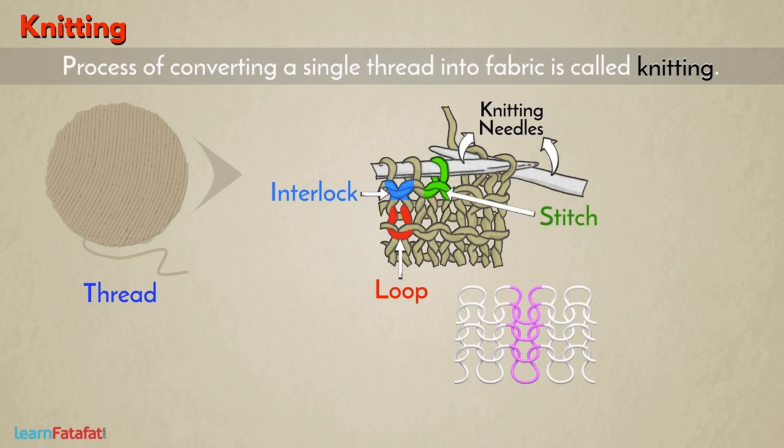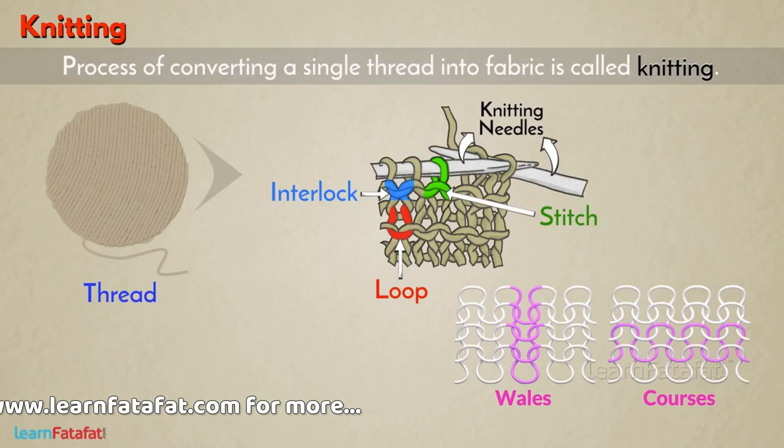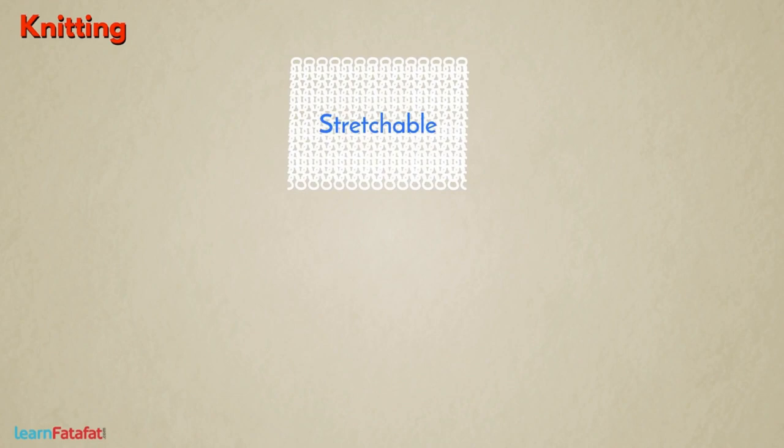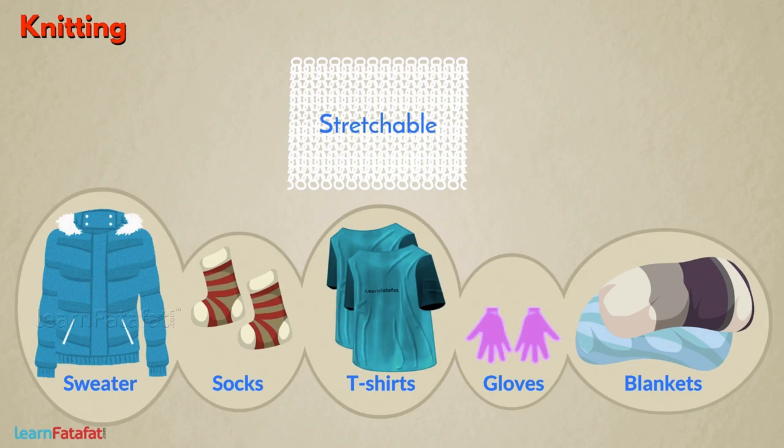The vertical columns of interconnected loops are called wales and horizontal rows of interconnected loops are called courses. In wales or courses, the yarn follows a circuitous meandering path. A very important property of knitted fabric is that it is stretchable. With this property, we are able to produce things such as sweaters, socks, t-shirts, gloves, blankets as well as close-fitting garments. On wearing, the loop structure stretches and takes the body shape giving a tight fitting.